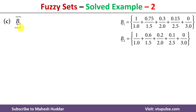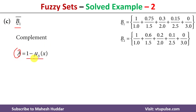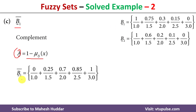The next operation is the complement of a given fuzzy set. The complement is always calculated using the formula: 1 minus the degree of membership of an element. For B1 complement, element 1 has a degree of membership of 1, so 1 minus 1 equals 0 in the complement. For element 1.5, the degree of membership is 0.75, so 1 minus 0.75 equals 0.25, and so on.